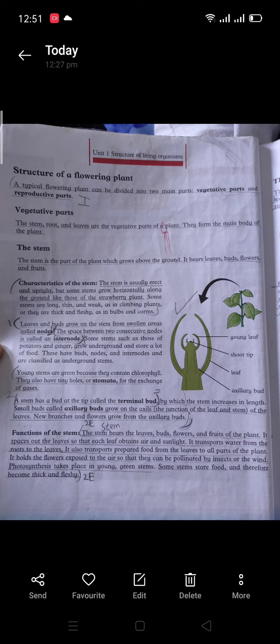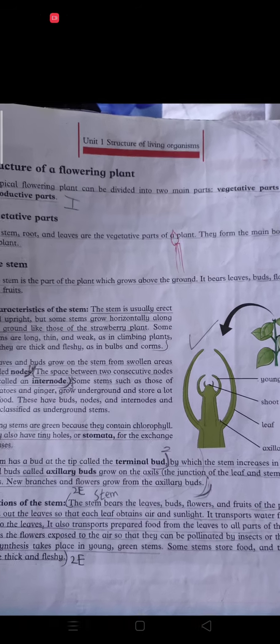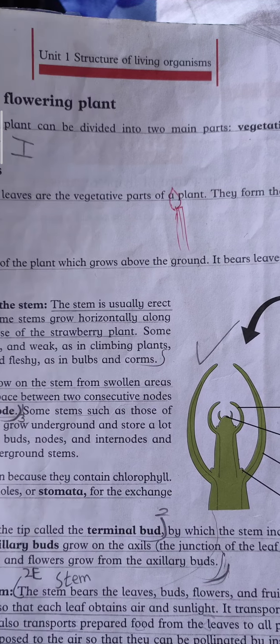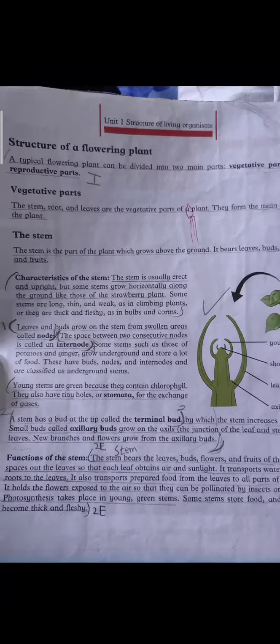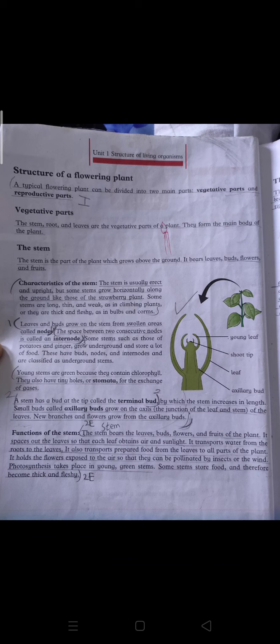Vegetative parts are usually for humans. Allah Almighty has made them for human food. So we are going to begin with vegetative parts. The stem, root, and leaves are the vegetative parts of the plant. They form the main body of the plant.